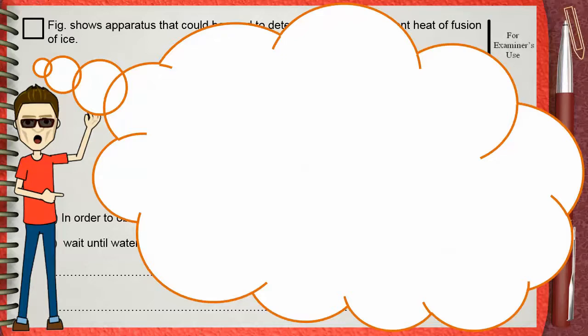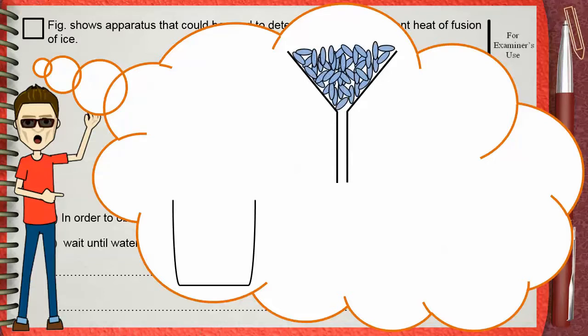Let's remember together. To find the specific latent heat of fusion of ice, you need an empty dry beaker and a funnel. Put your finely crushed ice in the funnel and then put the heater.